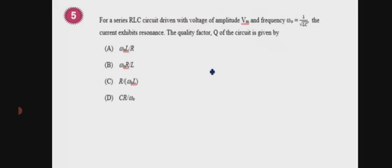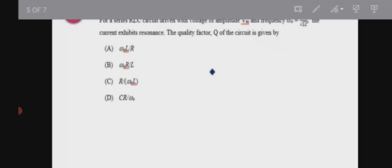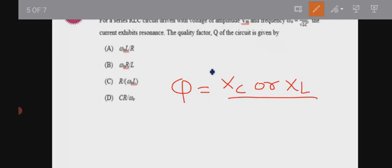For a series LCR circuit with given voltage and frequency, we need the quality factor at resonance. The quality factor Q equals XC over R or XL over R. This is a very important formula, especially for future engineering studies.